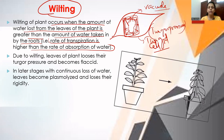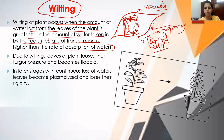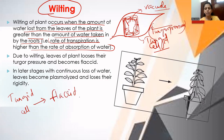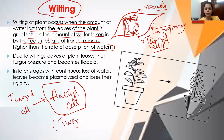In wilting, the rate of transpiration exceeds water absorption, so enough water cannot be supplied to the leaf cells. The turgor pressure is lost first, and the cell becomes a flaccid cell — a cell that still has some water but has lost its turgor pressure.